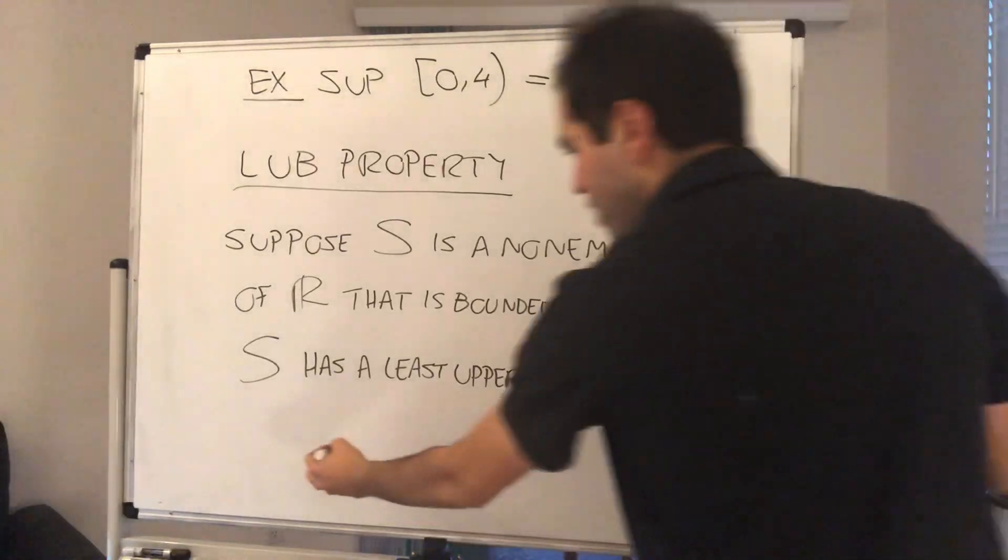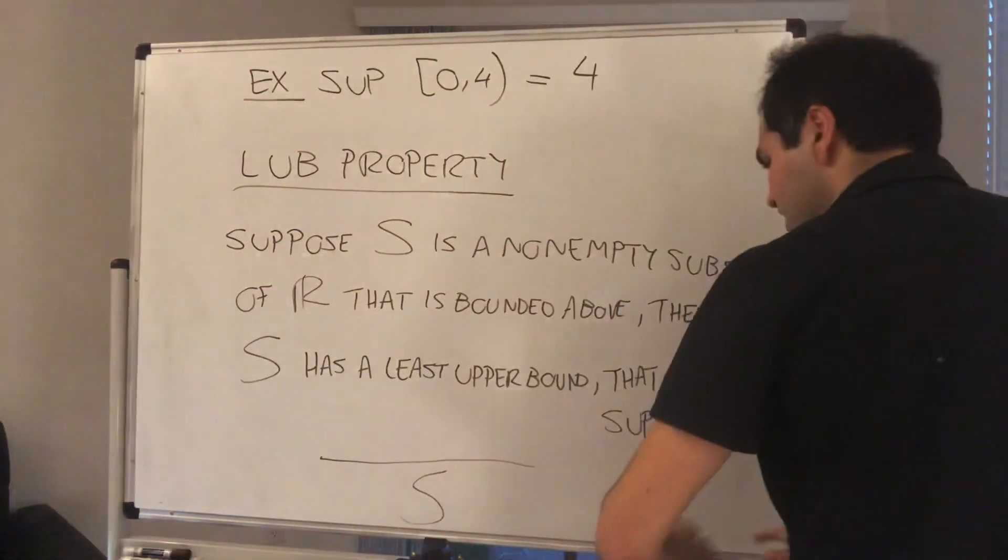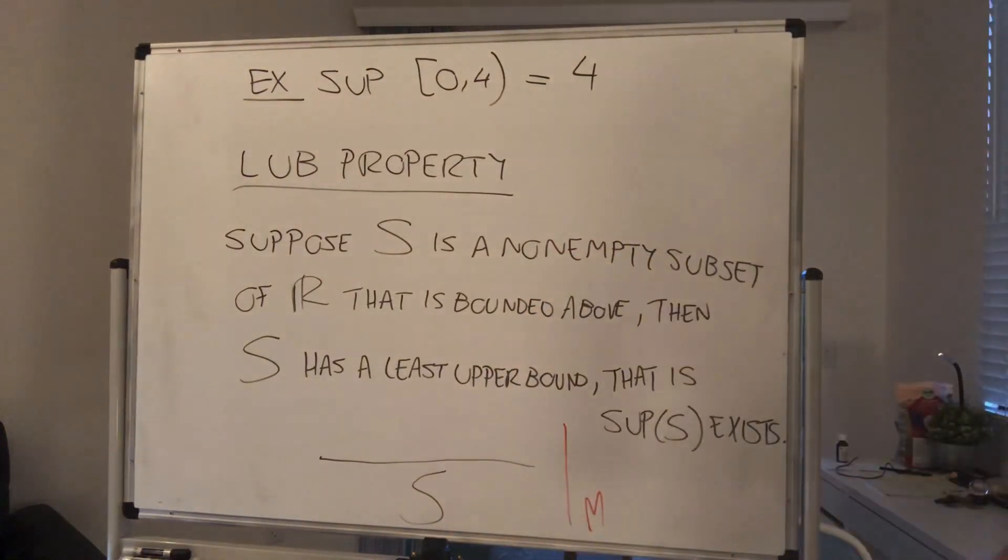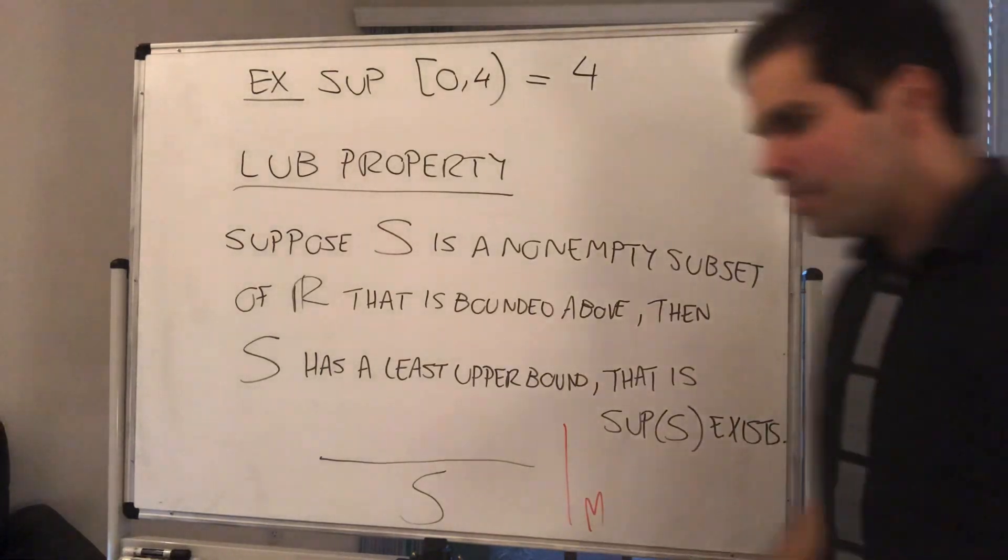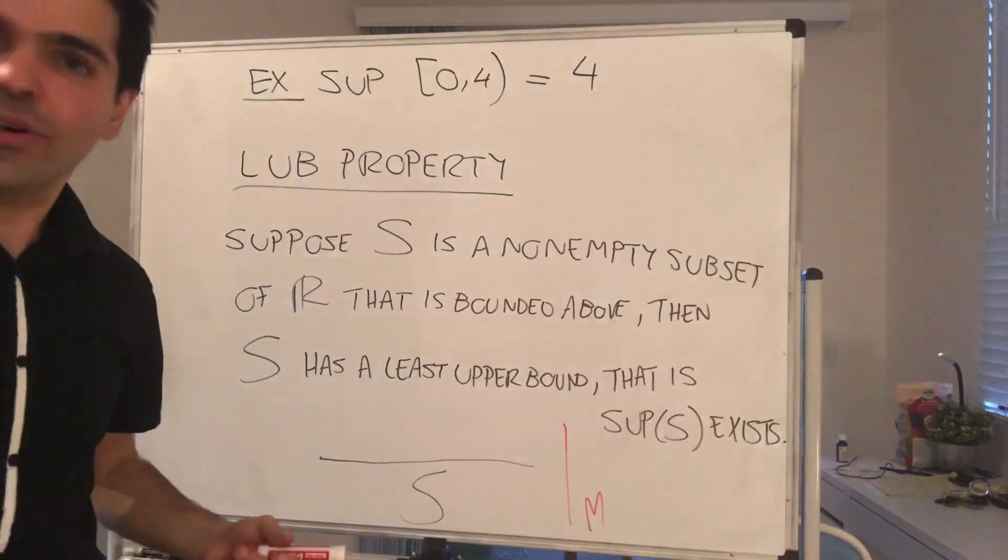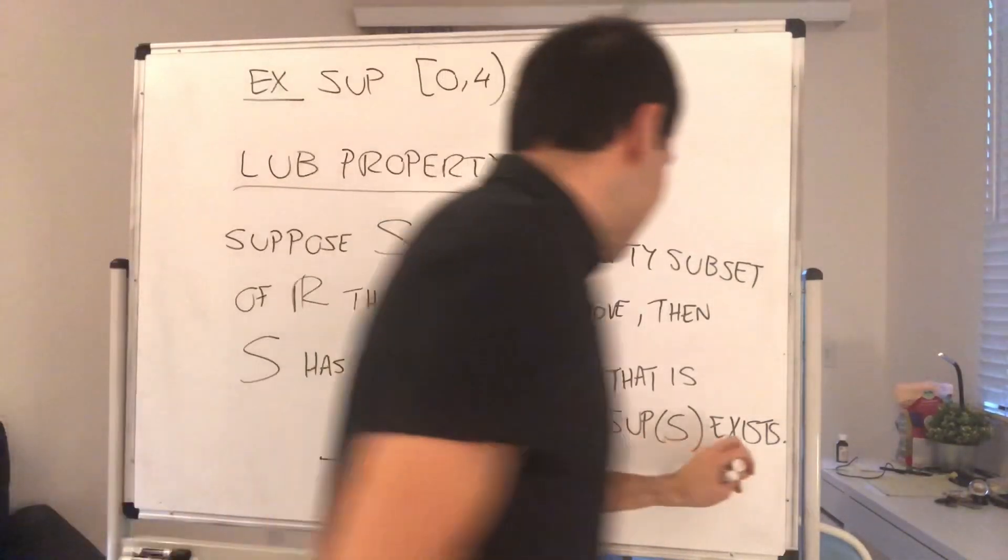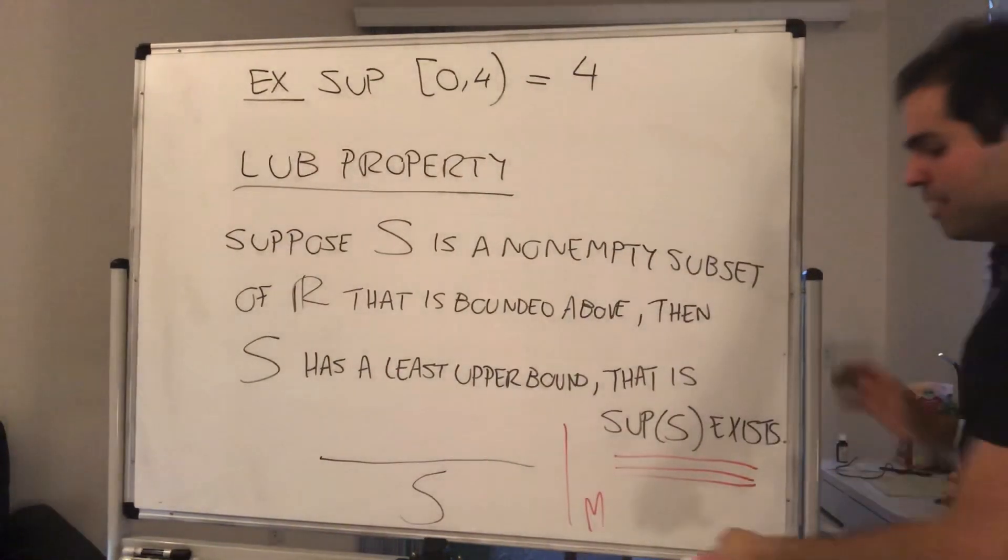What does that mean? If I give you a random set that's non-empty, and we know that it is bounded above by some number M, then automatically the supremum exists. And I know those are a lot of words, but literally the only thing you have to remember from this is the supremum always exists. Because, look,